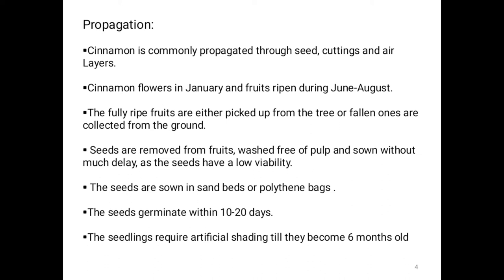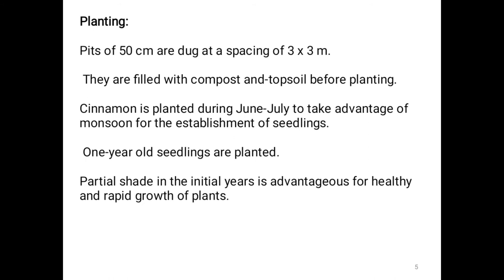Seedlings require artificial shading until they become six months old. Planting pits of 50 centimeter size are dug at a spacing of 3 x 3 meters, and filled with FYM, compost, and topsoil before planting. Cinnamon is planted during June to July to take advantage of the monsoon. One-year-old seedlings are planted, and partial shade in the initial years is advantageous for healthy and rapid growth.